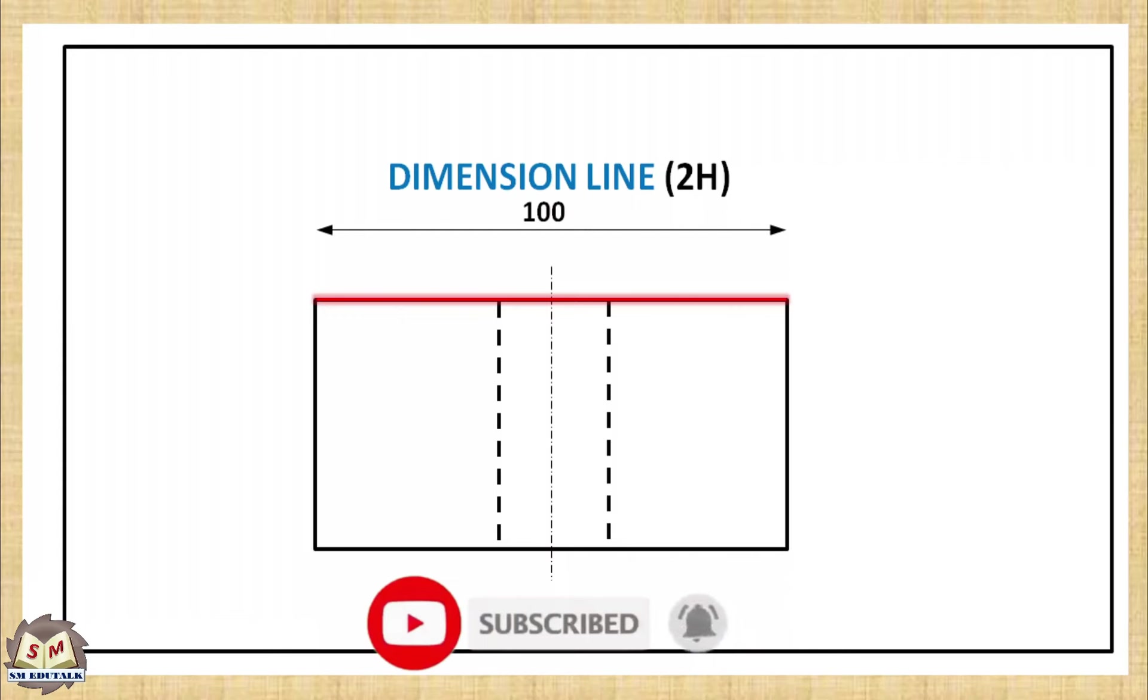Here, it represents the length of the object line, that is 100mm. The length of the line should not be longer than or shorter than the object line. Its length must be equal to the object line.